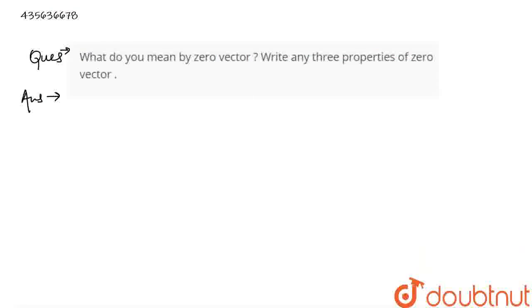So first of all, let's understand what zero vector is. Zero vector is a vector whose magnitude is zero and direction is arbitrary, or some can say undefined.